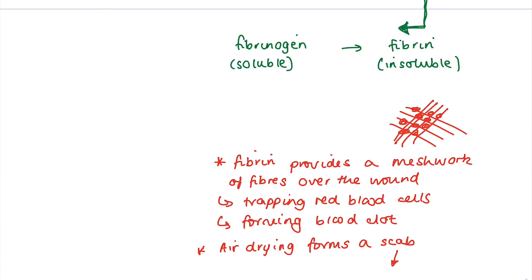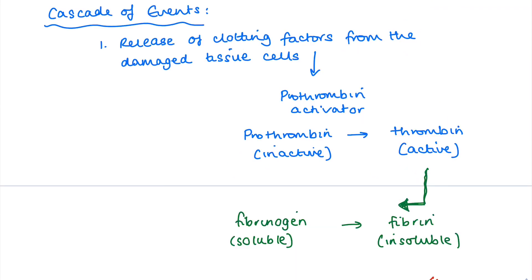The scab provides a protective layer over the wound. Notice that this cascade of events is very quick and localized, so it occurs exactly where you want it to occur. You don't want it just happening at random within the blood vessels, because otherwise you'll end up with a blood clot which could have major issues if it lodges in the brain or the heart, for example.